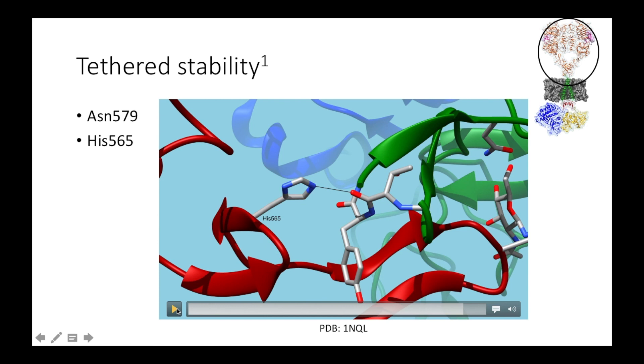Here we can see the interaction of histidine 565 of domain 4 with the backbone carbonyl of this valine residue. In HER2, this histidine is replaced by a phenylalanine residue. HER2 has lost the ability to bind EGF, so this lack of a stabilizing tethered interaction helps it maintain an extended conformation without ligand binding.